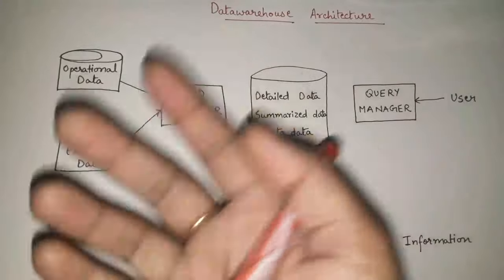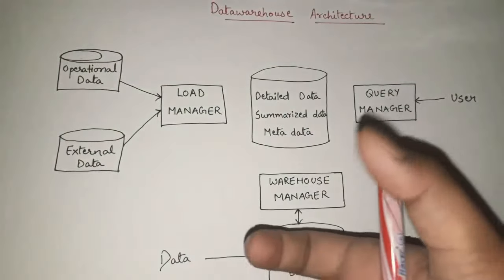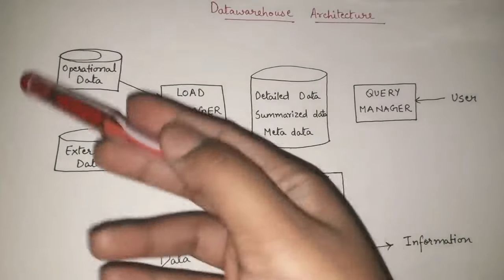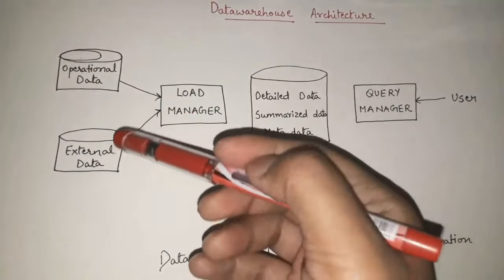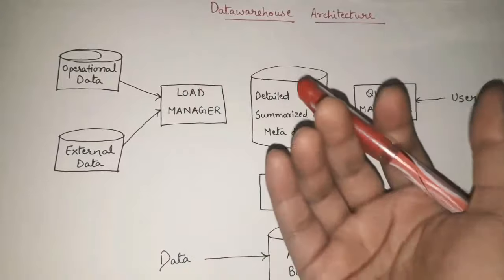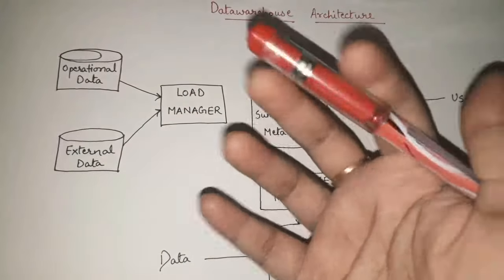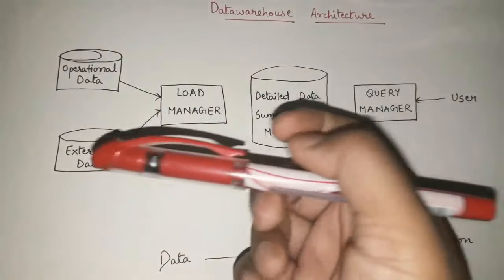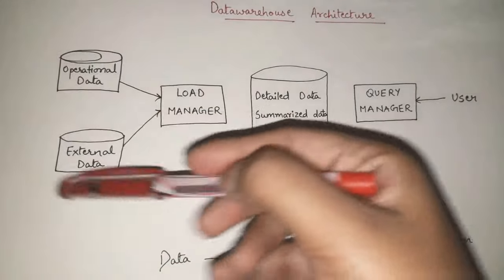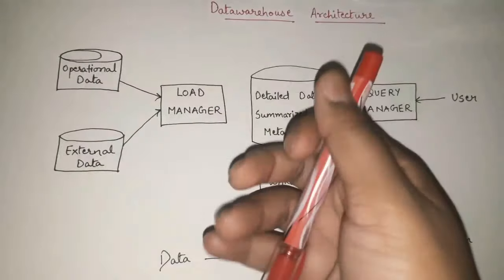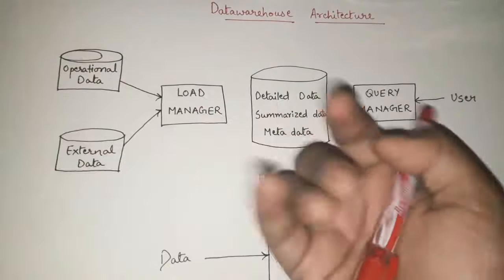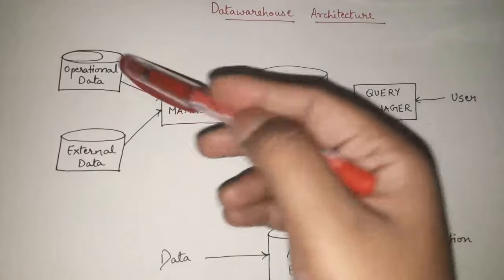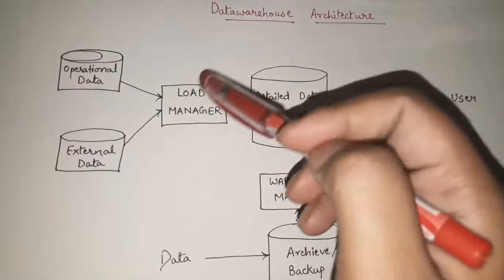Operational data means whenever we are receiving data from databases — like Oracle, relational databases, non-relational databases — any data from databases on which we can directly perform operations, we call that operational data. External data means data coming from any external sources or external links. So these are the two broad categories of incoming data.